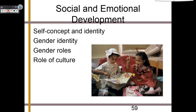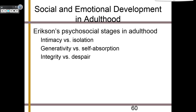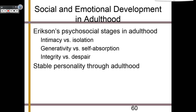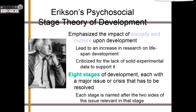When talking about the development of our identities, we are of course talking about Erikson's psychosocial stages. If we answer the right question in each of the crises in his eight stages, we will develop a stable personality throughout adulthood and mature emotions. Erikson emphasized the impact of society and culture upon development, and this emphasis led to an increase in research on lifespan development. However, he was criticized for the lack of solid experimental data to support his ideas. Eight stages of development, each with a major issue or crisis that has to be resolved, make up his stage theory — each stage is named after the two sides of the issue relevant in that stage.